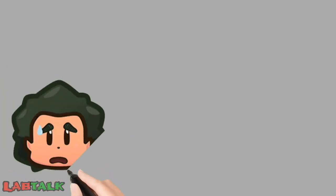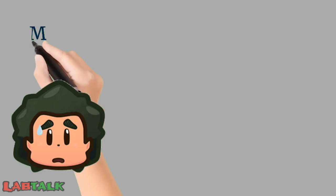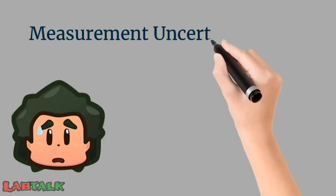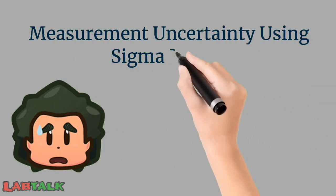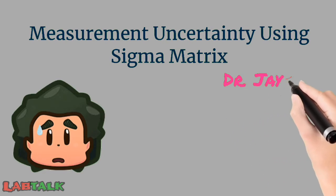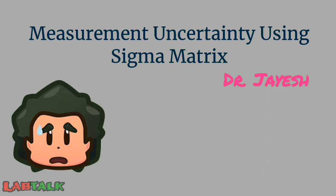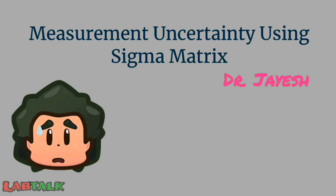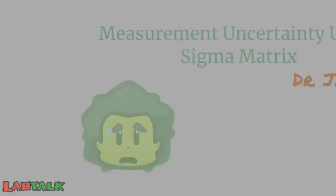In this video, we are going to see how to use sigma matrices to find out the measurement uncertainty or the CV percentage which needs to be maintained by the laboratory, or the benchmark target CV percentage to achieve world class performance — that is 6 sigma — or industry standard performance — that is 4.5 sigma.